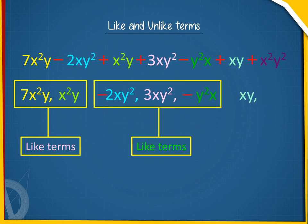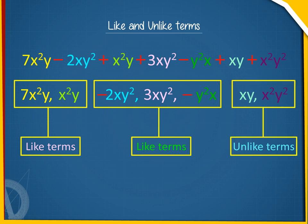xy and x²y² — unlike terms. Terms in an expression which have the same variable factors are called like terms, and the others are called unlike terms.